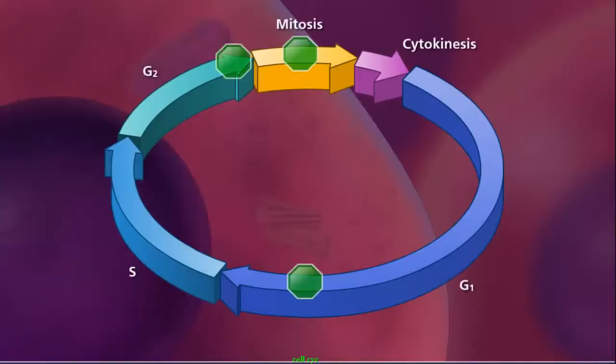During the cell cycle, certain checkpoints are encountered to make sure the process is occurring accurately. And if it is not, the cell cycle will stop at the checkpoint and correct, or possibly inhibit that cell from dividing.